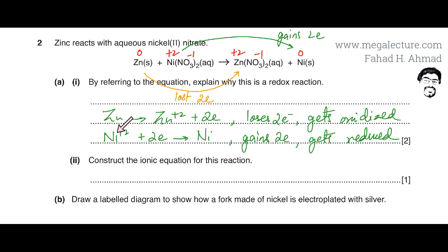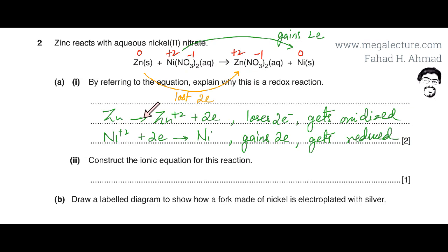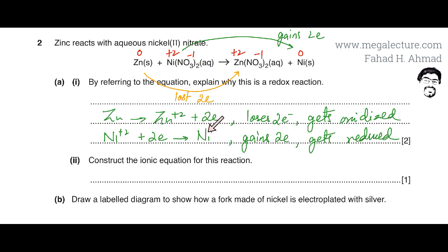Nickel went from plus two and gained two electrons to form neutral nickel metal, so it gets reduced. You can describe this in words: zinc lost two electrons and got oxidized; nickel²⁺ gained two electrons and eventually got reduced.